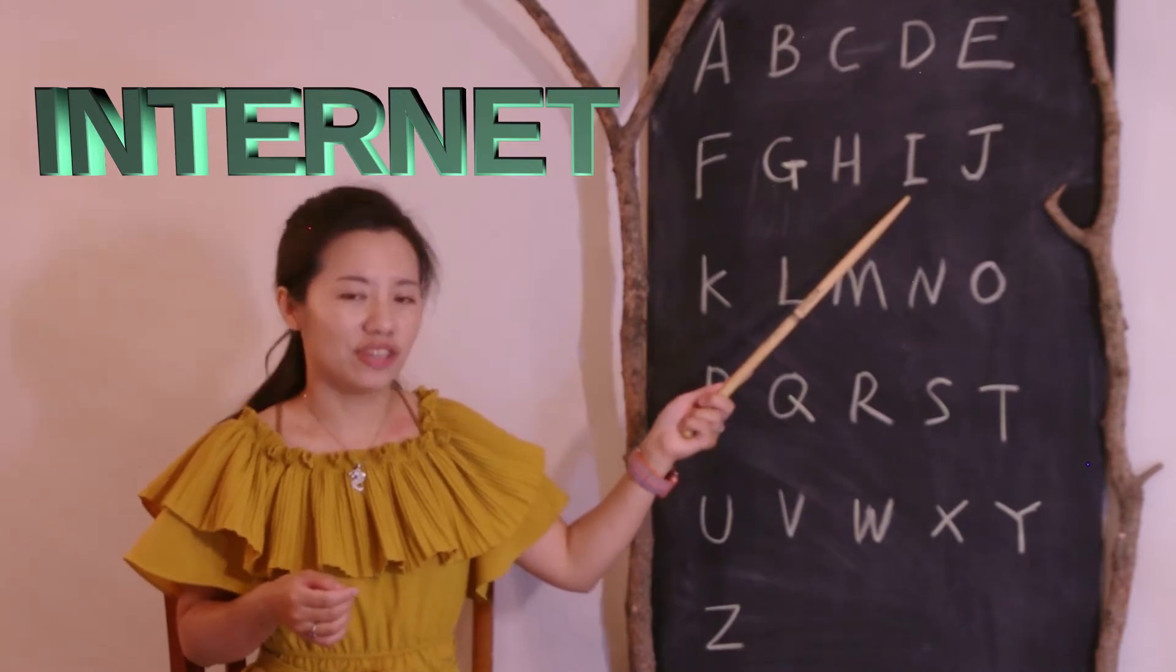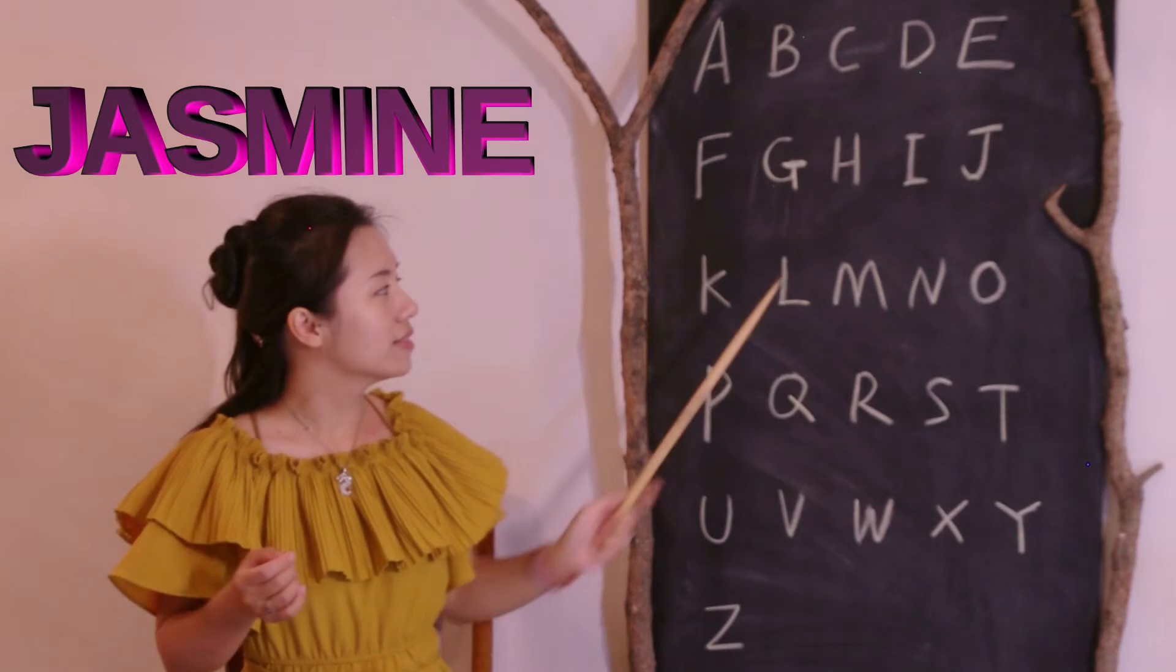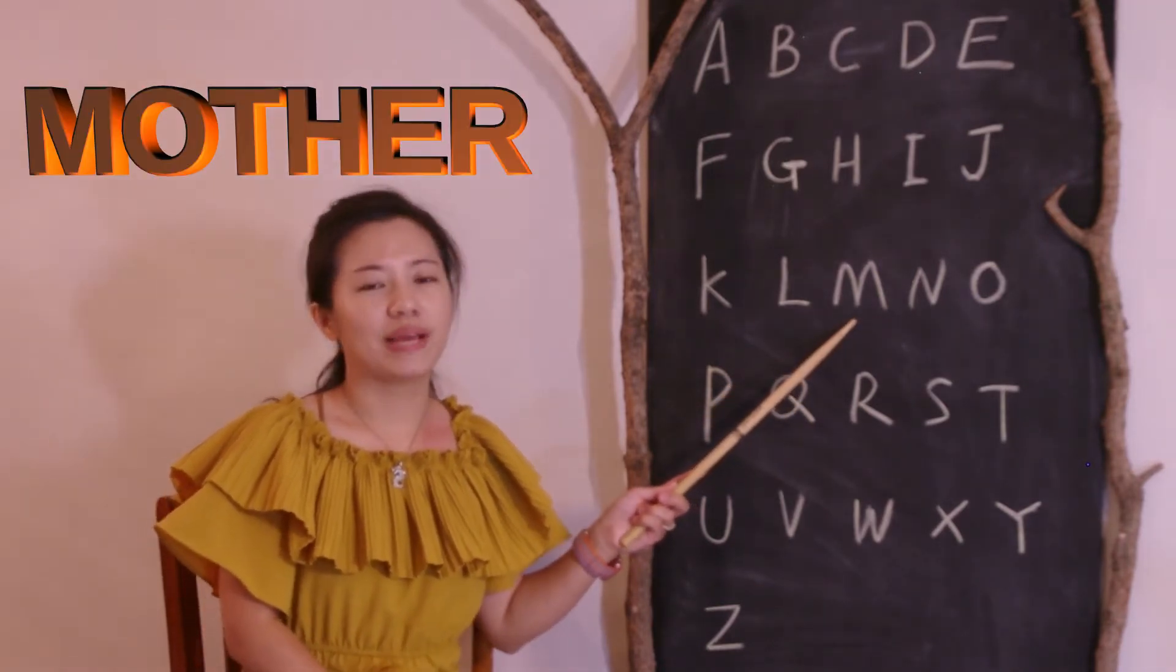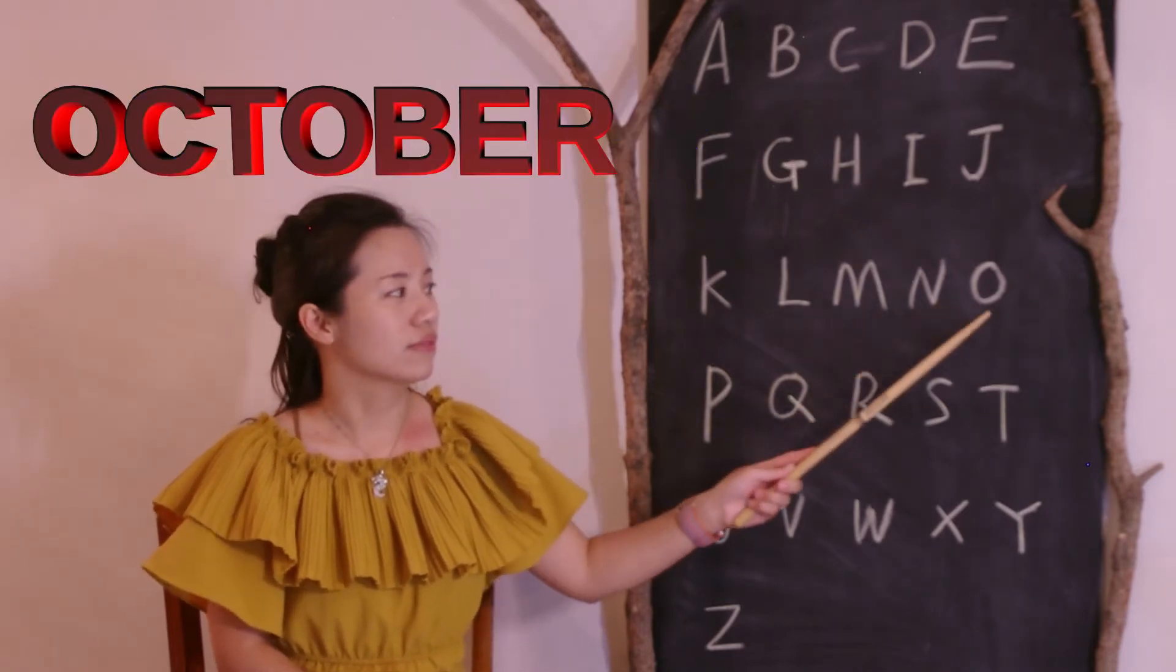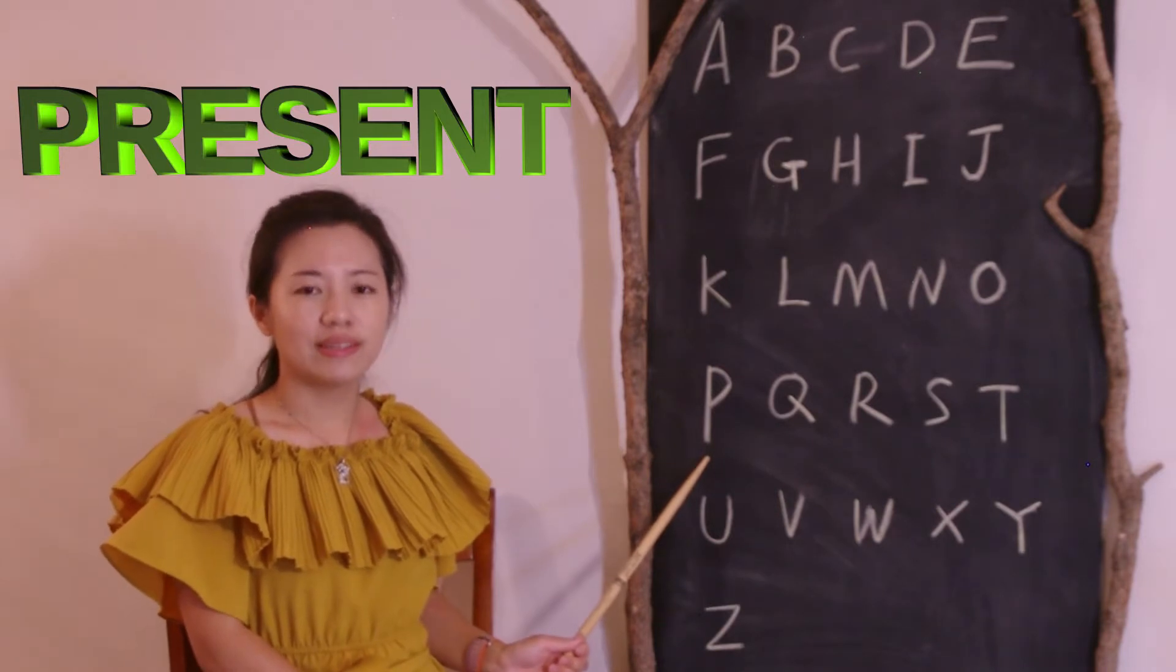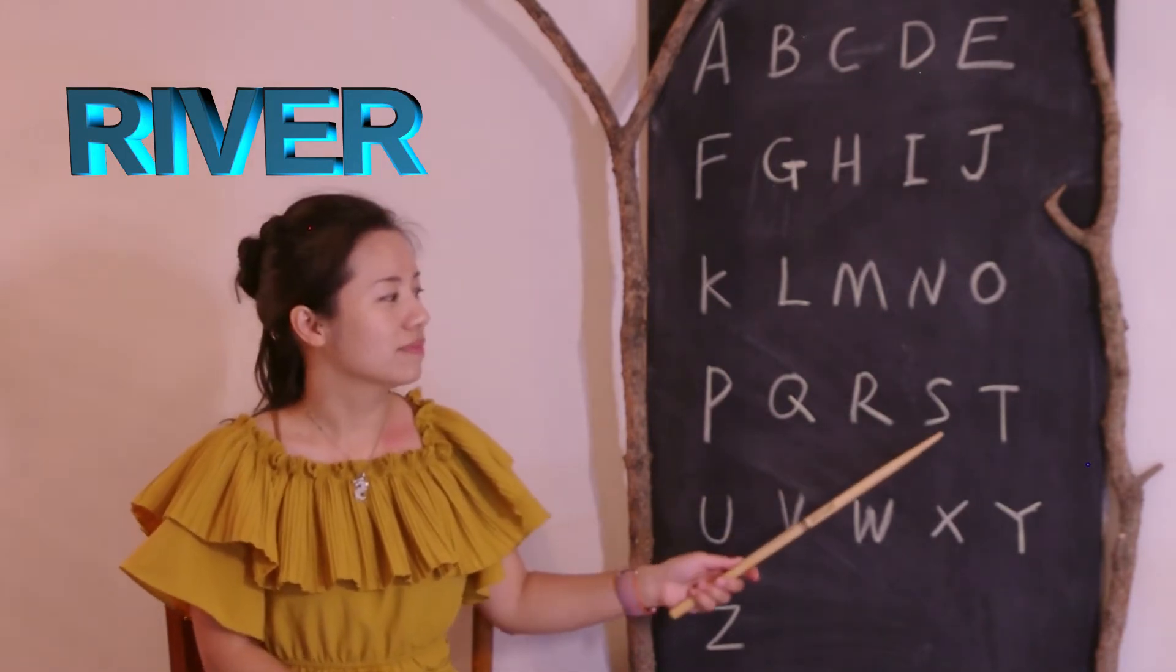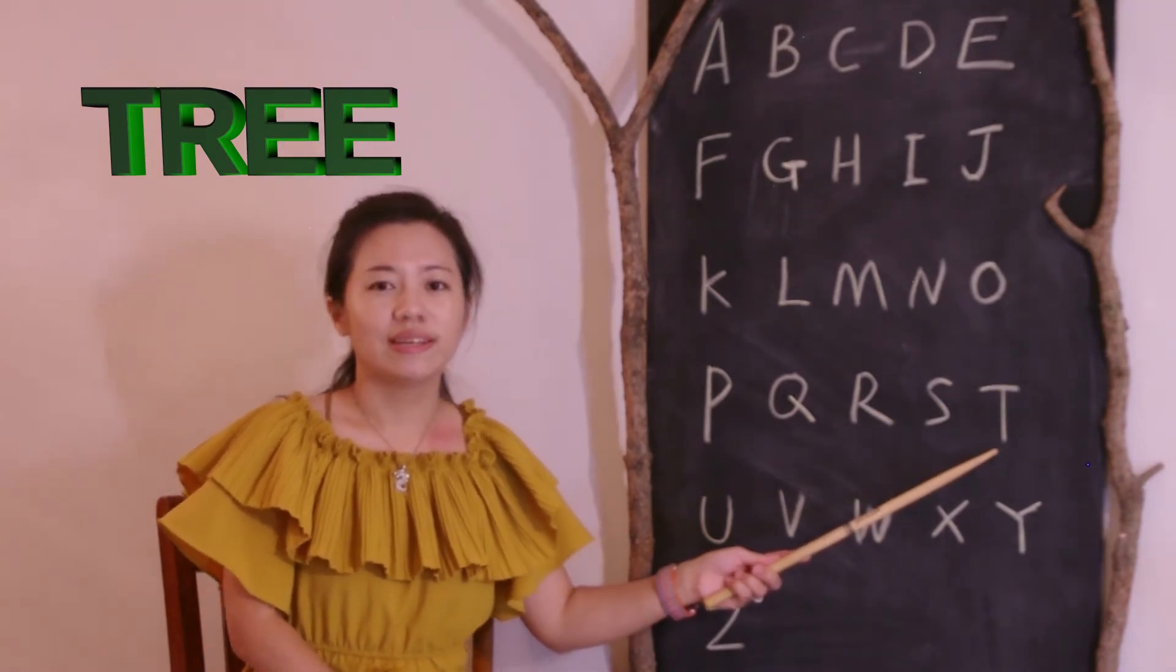I like internet. J like jasmine. K like karaoke. L like lemon. M like mother. N like November. O like October. P like pregnant. Q like queen. R like river. S like street. T like tree.